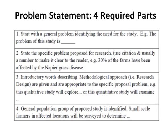Problem statement has four required parts: part one, start with a general problem identifying the need for the study — example: 'the problem of this study is...'; part two, state the specific problem proposed for research using a citation — example: '30 percent of the farms have been affected by the napier grass disease'; part three, introductory words describing the methodological approach — example: 'this qualitative study will explore' or 'this quantitative study will examine'; part four, the general population group of the proposed study is identified — example: small-scale farmers in affected locations will be surveyed to determine...